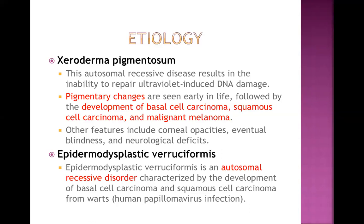Epidermodysplasia verruciformis is also a hereditary autosomal recessive disorder characterized by the development of basal cell carcinoma and squamous cell carcinoma. In this condition, numerous HPV lesions occur on the body — it is the most severe type of HPV infection, and later on it can develop into malignancy. These are some of the etiologies of basal cell carcinoma.